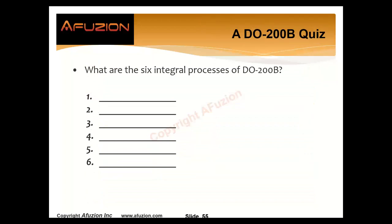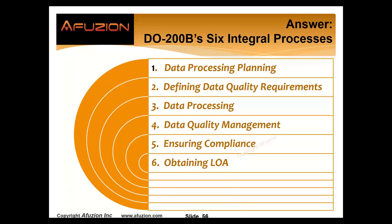Let's take a quick quiz. What are the six integral processes? Number one: data processing planning — got to have plans to assess them. Number two: define data quality requirements, DQRs. Number three: the data processing itself — from receipt through transmission. Number four: how do you manage data quality? Number five: how do you ensure compliance? Number six: do you need an LOA, what kind, how do you get it, and how do you maintain it?